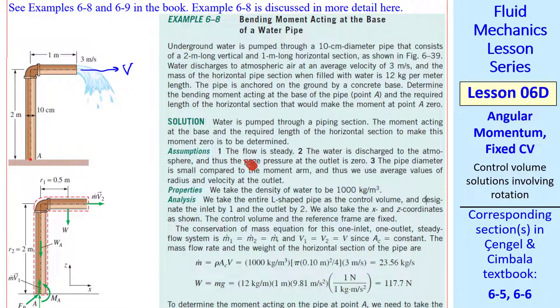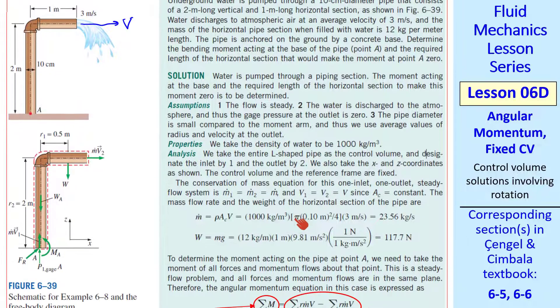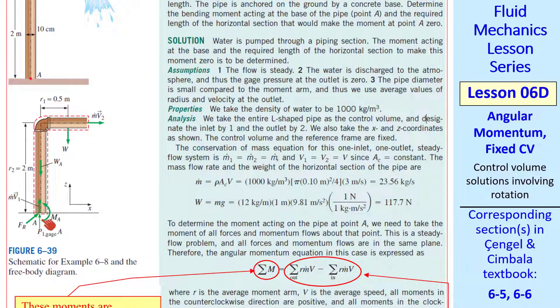Here are our assumptions and approximations. The flow is steady. Since this is a jet exiting into the air, the gauge pressure at the outlet is zero. The pipe diameter is small compared to the moment arm, so we can just use average values of radius and velocity at the outlet. First, we pick a control volume. A wise control volume would cut through that point A where we want to find the moment. And we go along the outside of the pipe, cutting through the outlet.